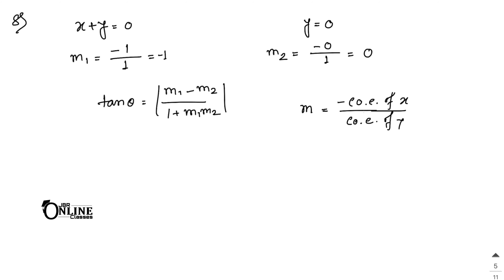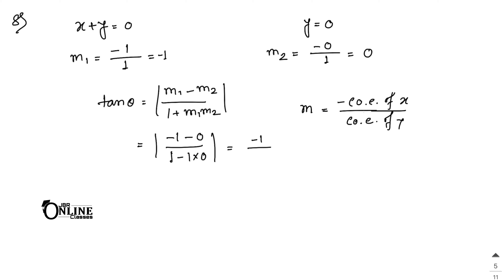Substituting m1 equal to minus 1 and m2 equal to 0: the numerator is minus 1 minus 0 which is minus 1, and the denominator is 1 plus (minus 1)(0) which is 1. Within the modulus the answer is 1. So tan theta equals 1, which gives theta equal to 45 degrees as the final answer.